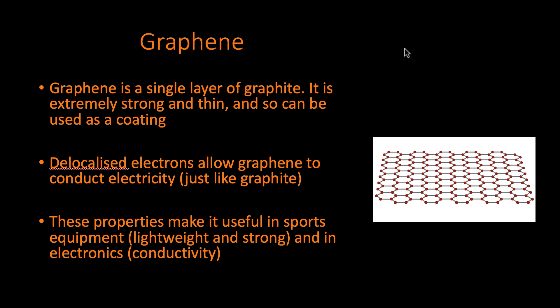You also have delocalized electrons which are able to flow anywhere in the overall giant structure. Graphene is a special type of graphite, basically a single layer of graphite, which makes it extremely thin and really lightweight.